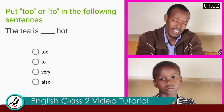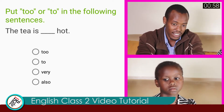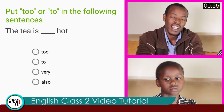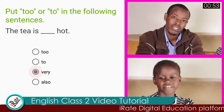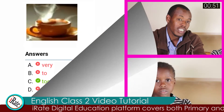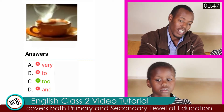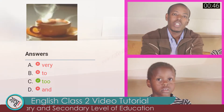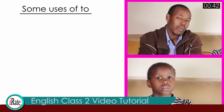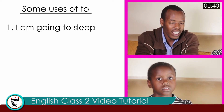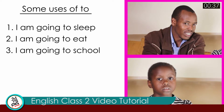Question number nine: put 'to' or 'too' in the following sentence — the tea is dash hot. What is your answer? Very. The answer is not 'very' but 'too.' We say the tea is too hot. Because the instruction says use 'to' or 'too.' We use 'to' when we say I'm going to sleep, I'm going to eat, I'm going to school.